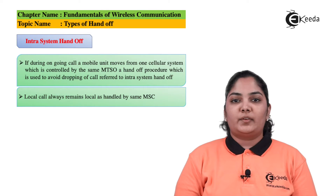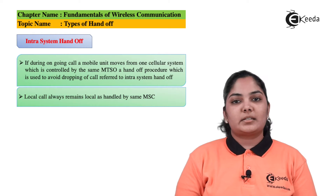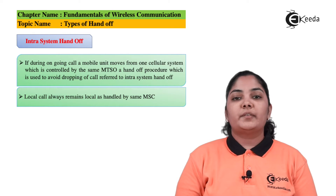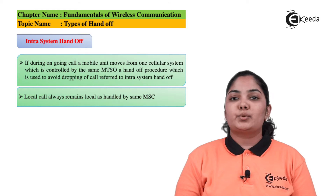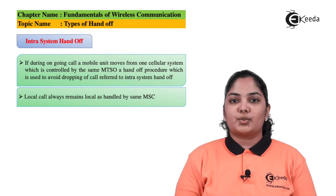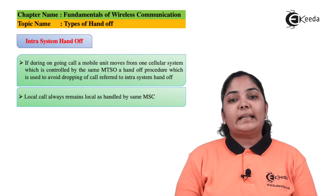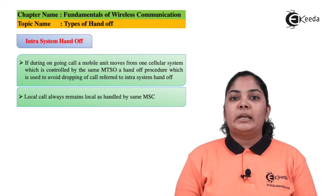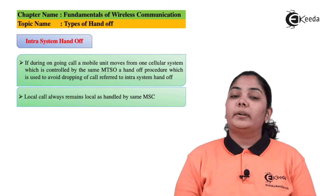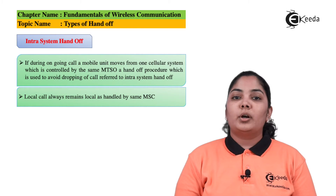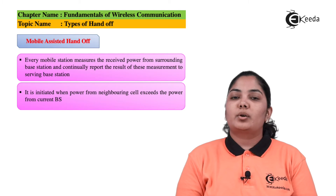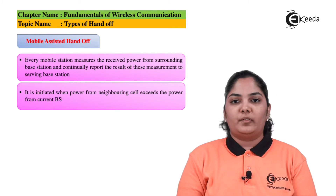The next type is intra-system handoff. In intra-system handoff, if a user is moving from cell A to cell B which is served by the same MSC or MTSO, it is known as intra-system handoff. It is certain here that a local call will remain a local call and will not become a long distance call.